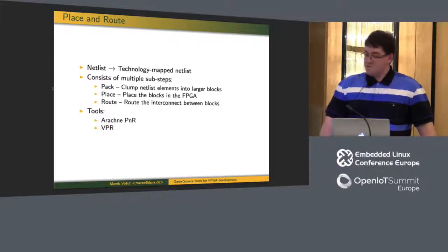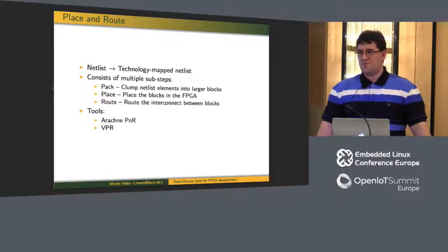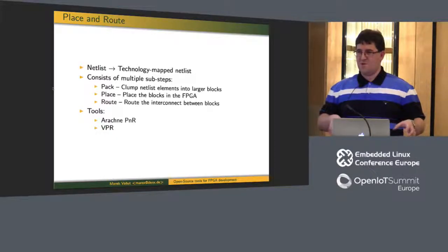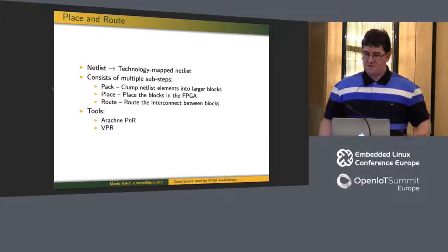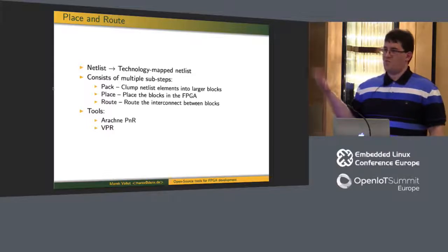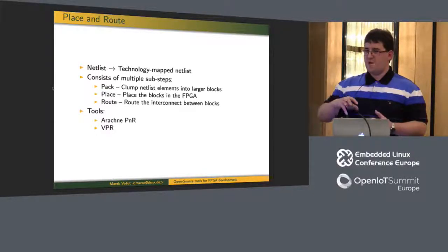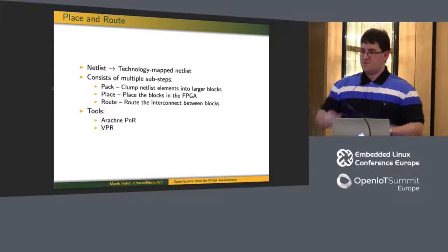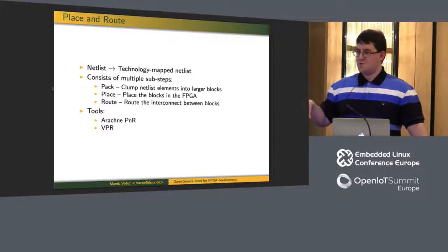Place and route: in this step you take the netlist and convert it into a technology map netlist, where the knowledge of the target FPGA enters the picture. It has multiple sub-steps. Pack: if you remember the logic array blocks — the clusters — these are created here, putting logic that should be close together into clusters to avoid long connections, since speed of light matters. Then place: it computes where these clusters go in the final FPGA. Then route: which connects the interconnect between these clusters.